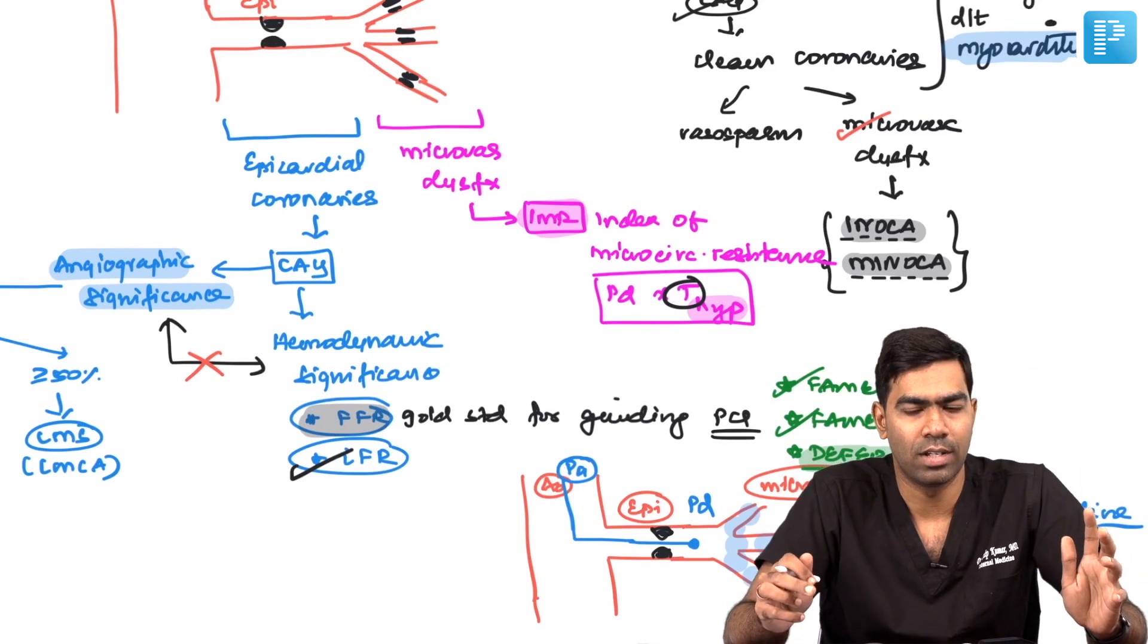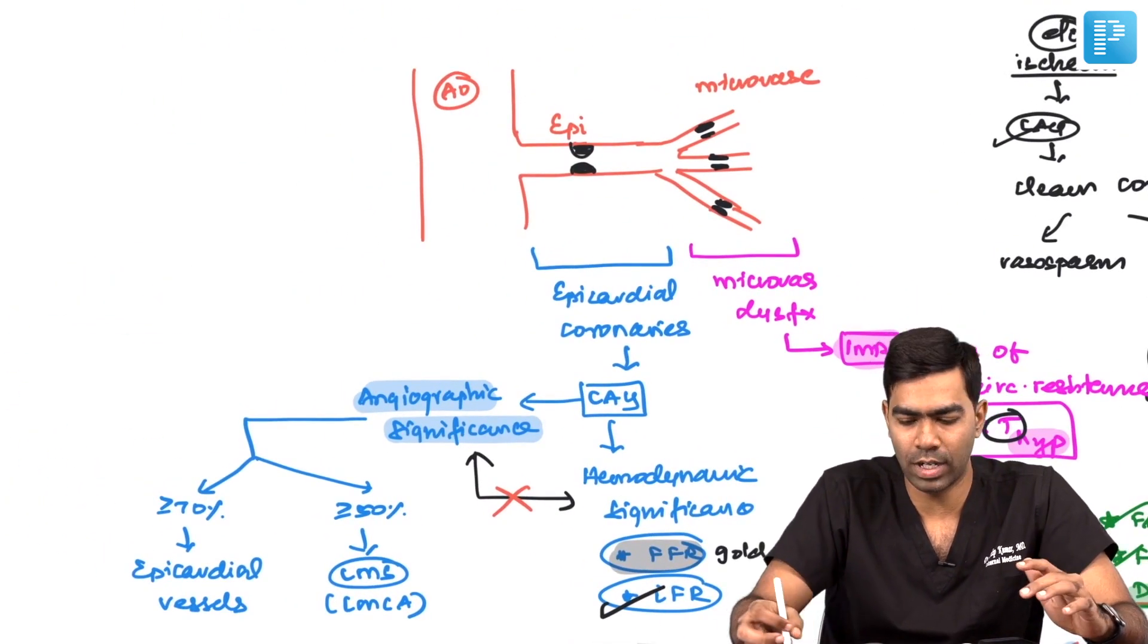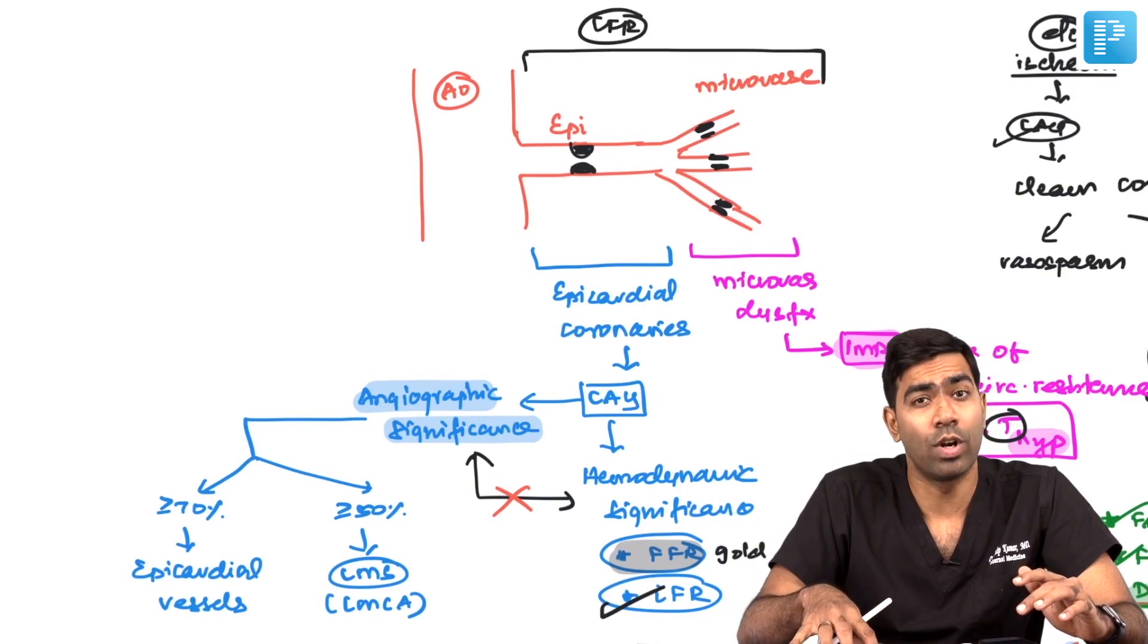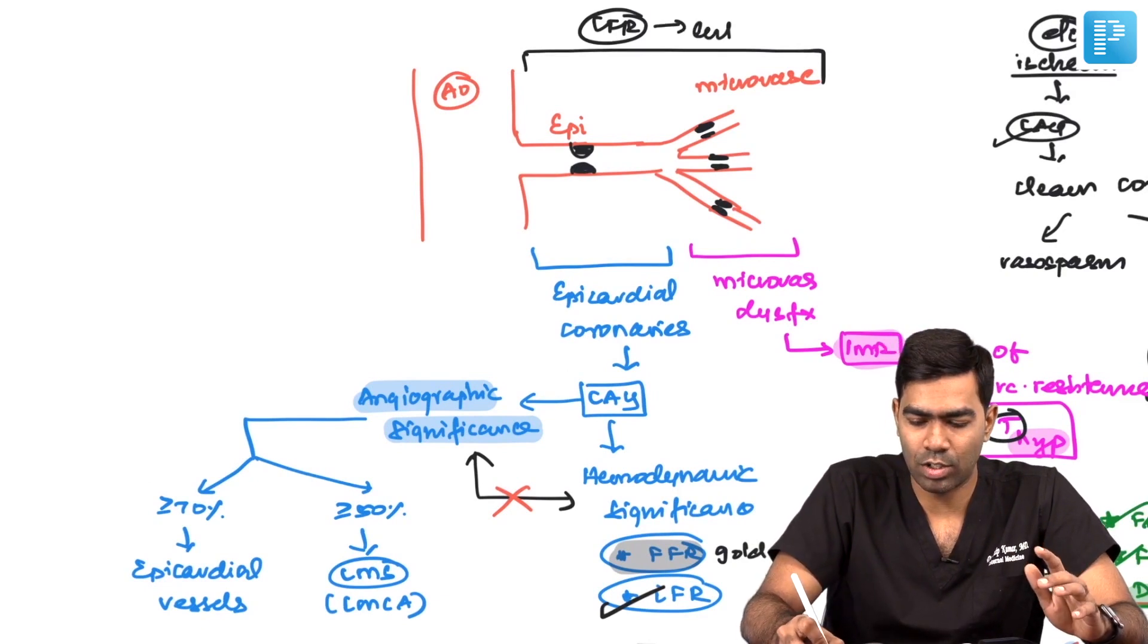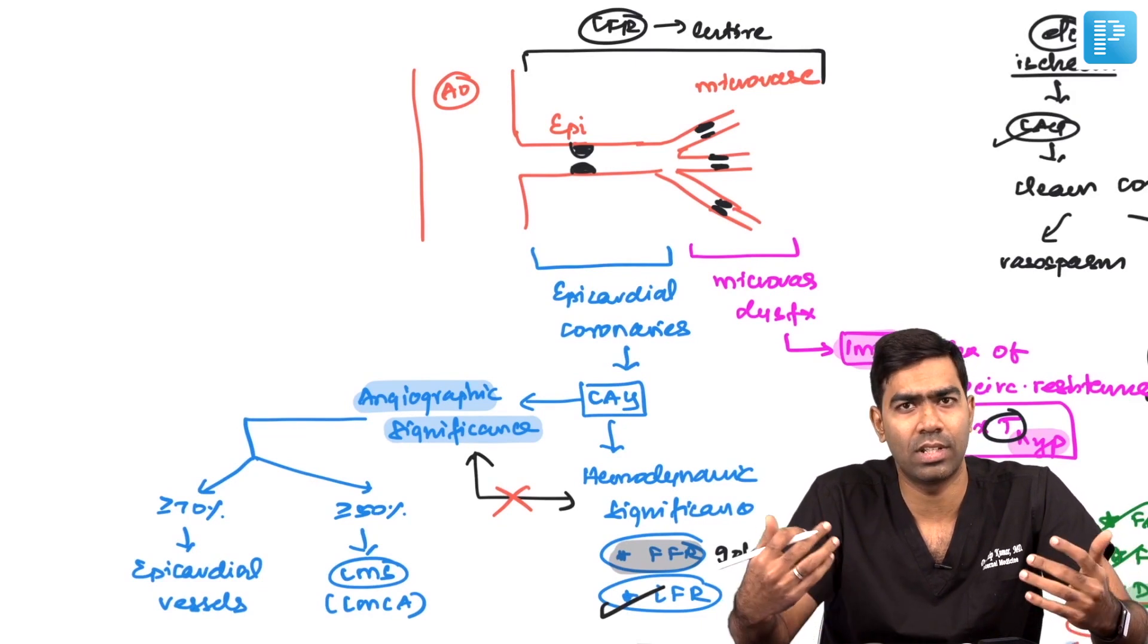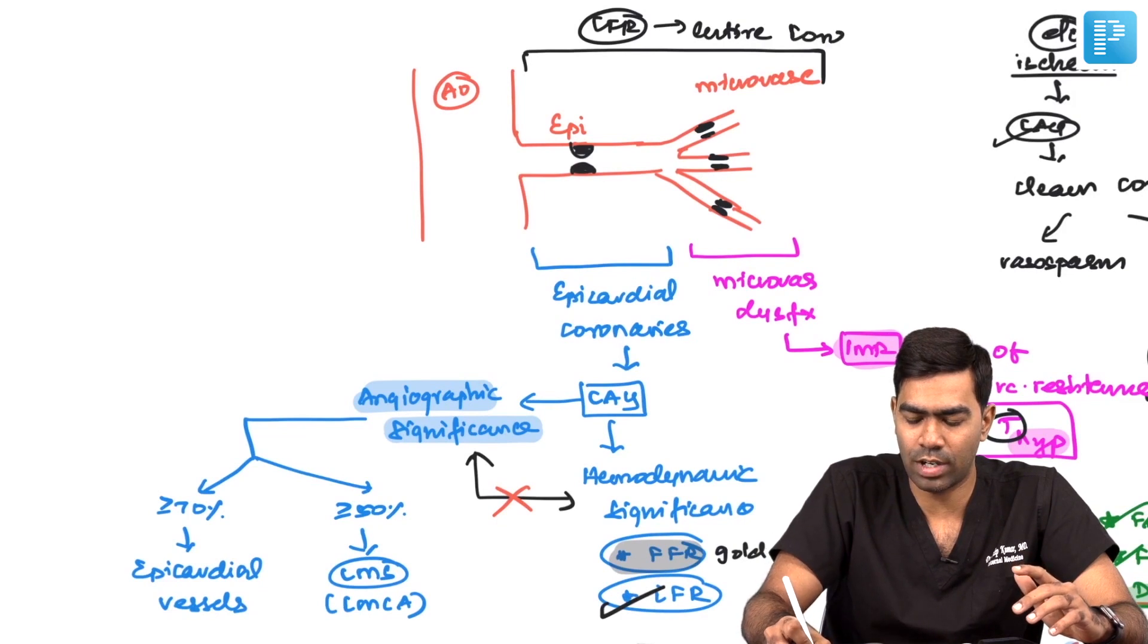There's another thing that is of a little utility, called CFR—coronary flow reserve. Coronary flow reserve assesses the entire coronary tree. It is not specific for the epicardial vessels nor is it specific for microvascular problems. It assesses the entire coronary tree.